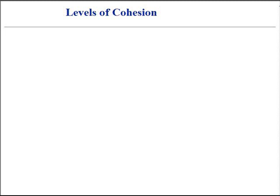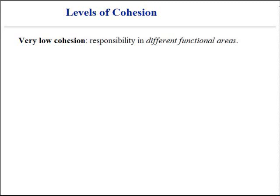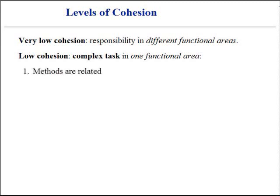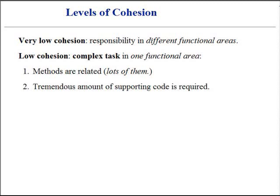Some scenarios illustrate varying degrees of functional cohesion. Very low cohesion occurs when a class is solely responsible for many things in very different functional areas. In this case, the responsibilities should be split into a family of related classes. Low cohesion occurs when a class has sole responsibility for a complex task in one functional area. The methods of the class are all related, but there are lots of them, and a tremendous amount of supporting code is required.